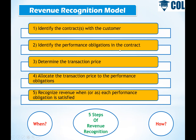Step 2 is to identify the performance obligations in the contract — for example, the buyer has an obligation and the seller has an obligation. Step 3 is to determine the transaction price — how much the customer will pay the seller. Step 4 is the allocation of the transaction price to the performance obligations, whether it is a single transaction, a series of transactions, or a bundle — for example, we sell a product, we have a warranty, and we have installation.